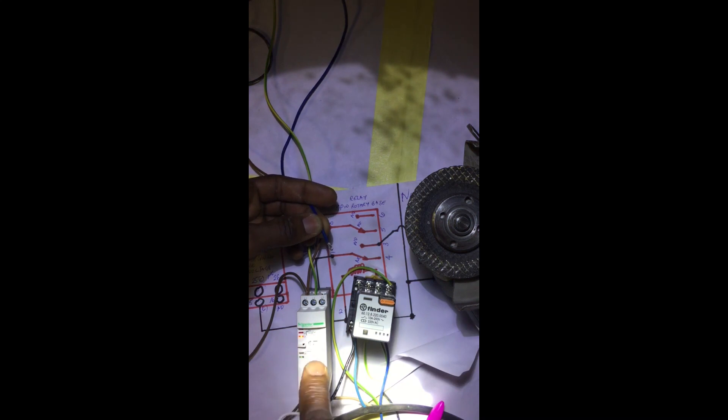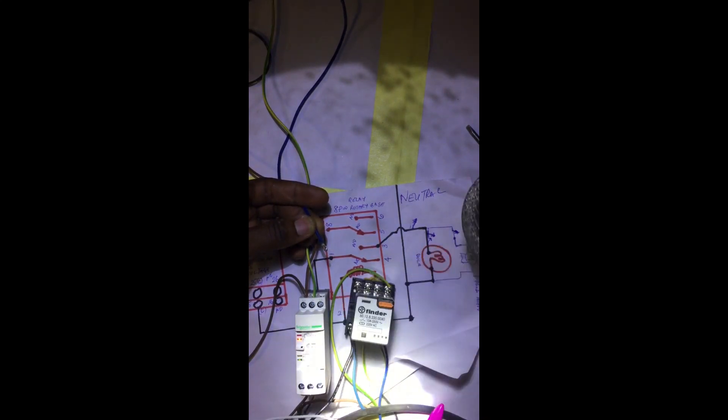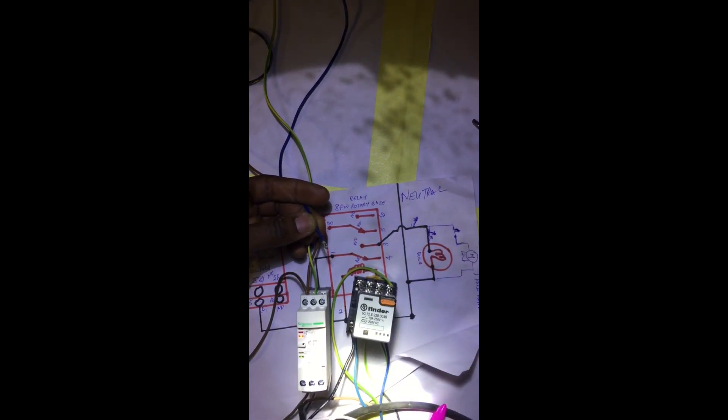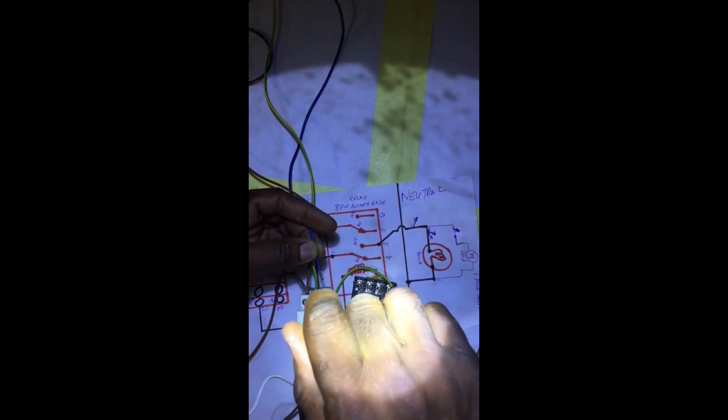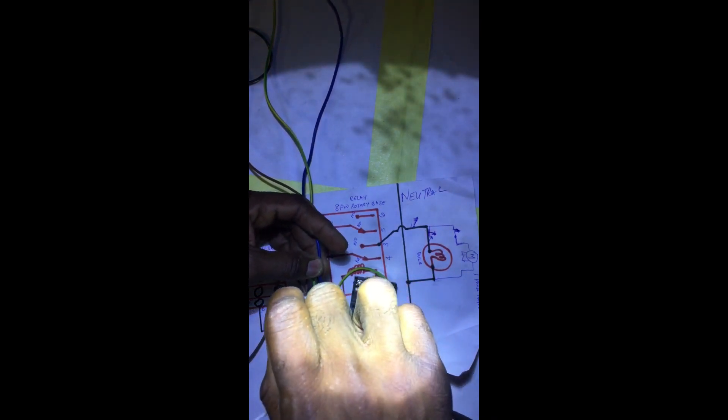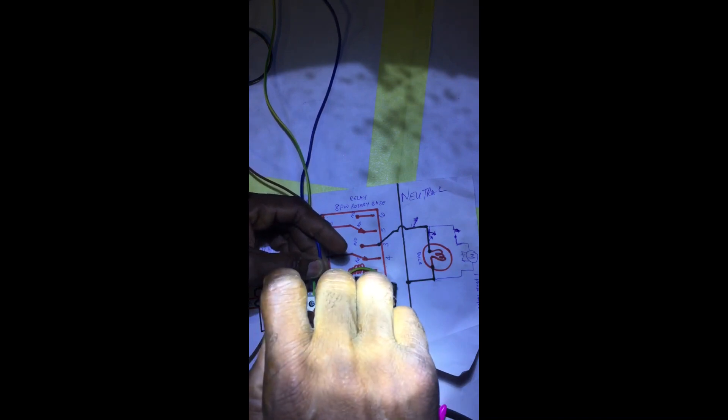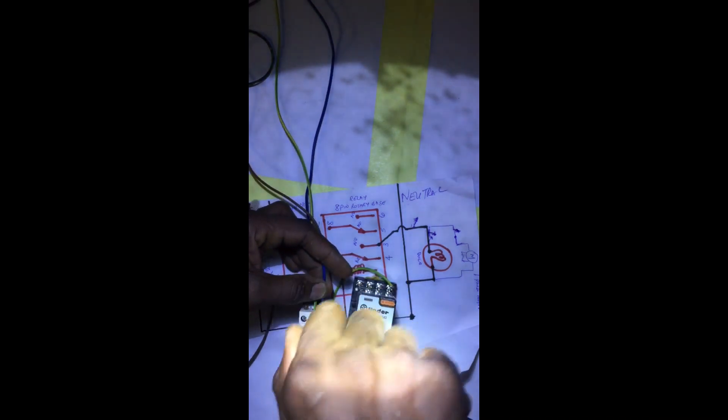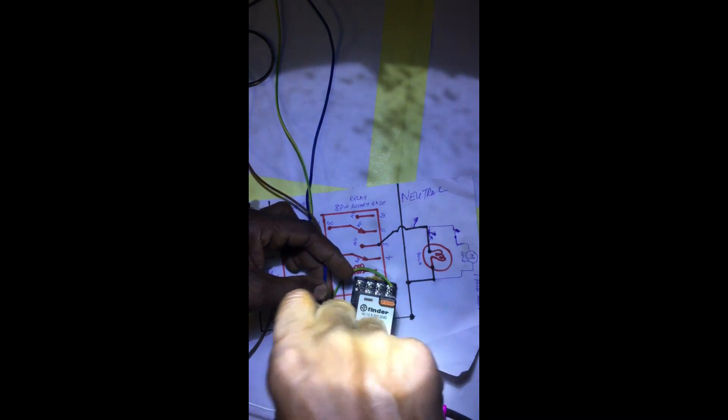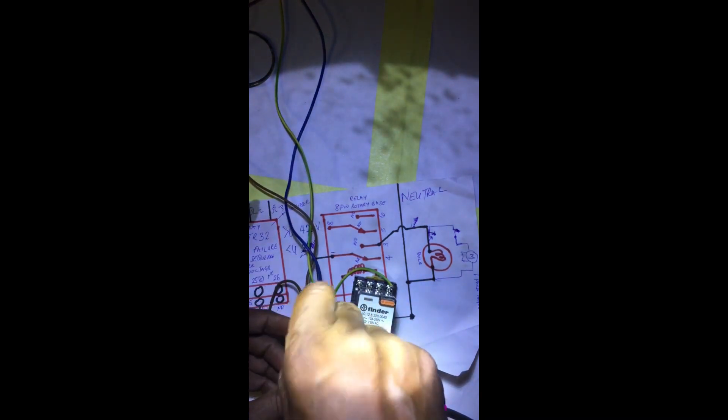The phase alarm is there, and this motor will not work again. This is why it is very critical that a device like this should be in place. When the power supply returns again to normal, the alarms are cleared and everything starts working as normal.